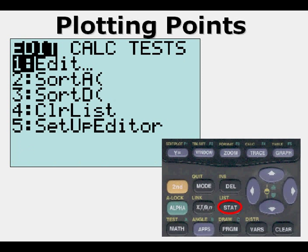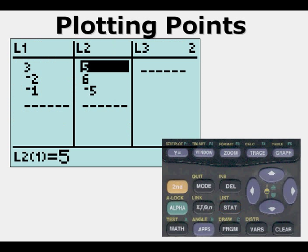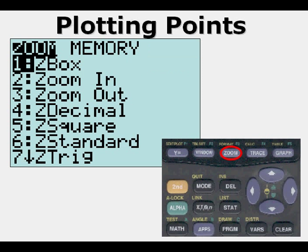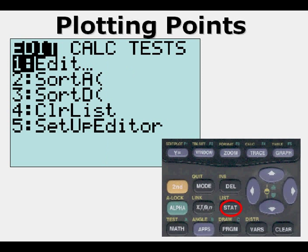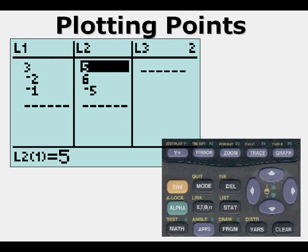We're going to do now is go to stat enter and we have our little points again. We're going to go to Zoom 6, which is standard, and now we can see our original triangle with the plus signs where little squares were before.